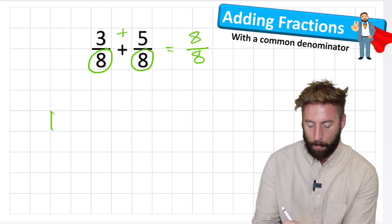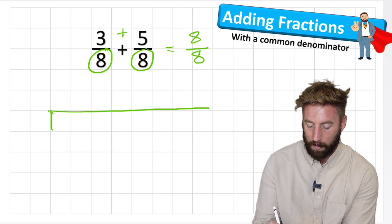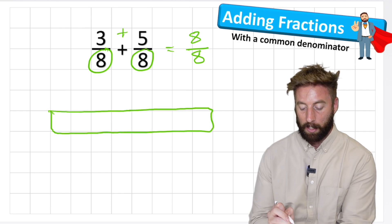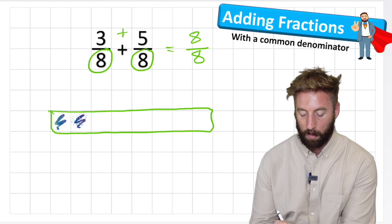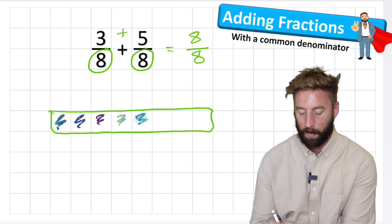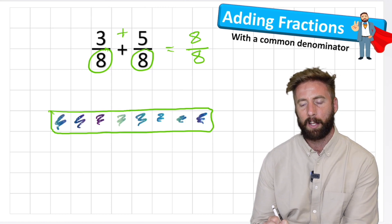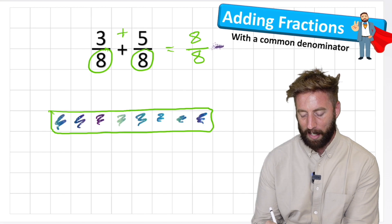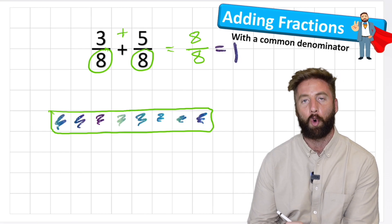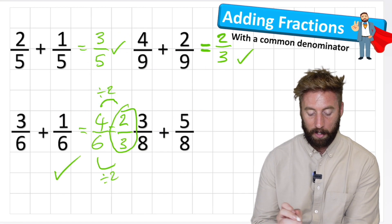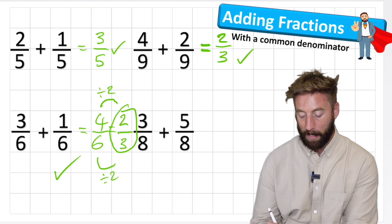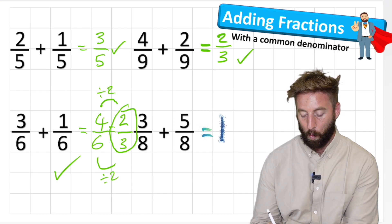Let's have a look at what that looks like in our bar model. One, two, three, four, five, six, seven, eight. Okay, so I have one, two, three, four, five, six, seven, eight. Okay, I have the whole thing. So eight eighths actually equals one, or one whole. So the answer to three eighths plus five eighths actually equals one. Give myself a funky colored tick.